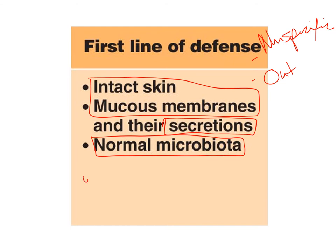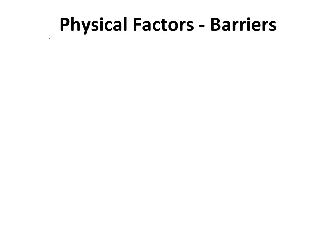There's one more component I'll add: washing processes — how your body is structured to wash out potential pathogens. These barriers and washing processes are part of the physical factors of your first line of defense, meaning how the body is physically structured to prevent infection.